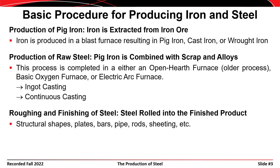The third step is the roughing and finishing process, where the steel is rolled into its final product. The shapes we're looking for are plates, bars, pipes, rods, W shapes, angles, channels, and things of that nature. These are the basic three steps: production of pig iron from raw materials, production of steel using iron as the basic constituent with alloying elements, and then the roughing and finishing process.